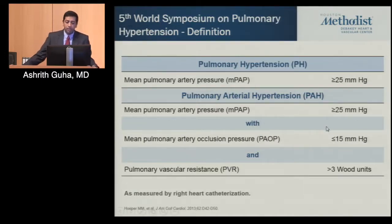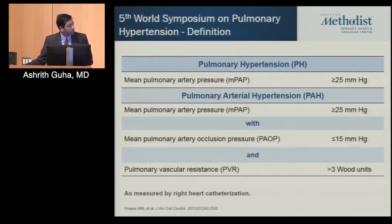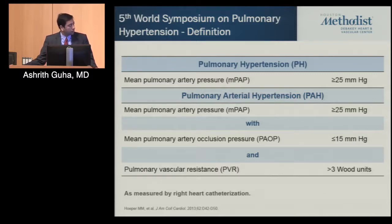From the fifth world symposium on pulmonary hypertension, the definition of pulmonary hypertension is a mean pulmonary artery pressure over 25. Pulmonary arterial hypertension — an important distinction — includes all who have mean pulmonary artery pressure over 25, while pulmonary arterial hypertension specifically refers to those whose pulmonary artery occlusion pressure, commonly known as wedge pressure, is under 15, with a PVR calculated as mean pulmonary artery pressure minus wedge pressure divided by cardiac output, greater than three Wood units.